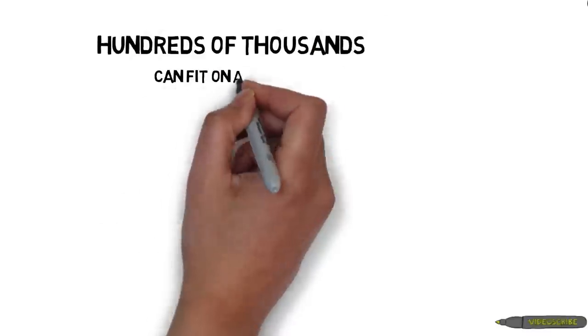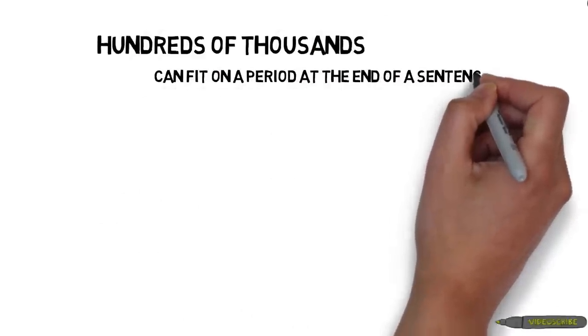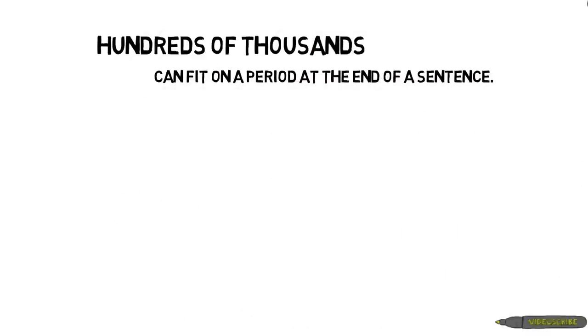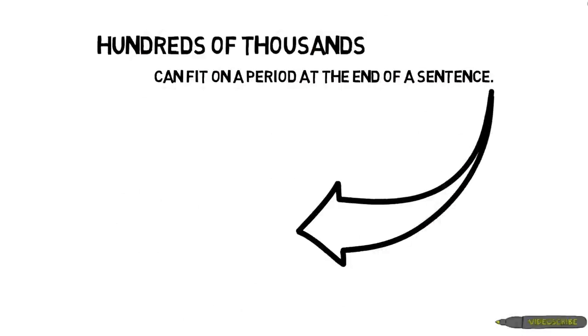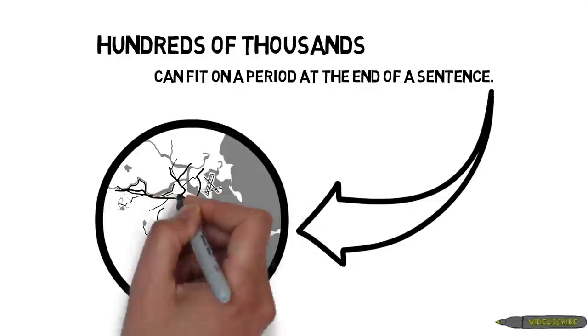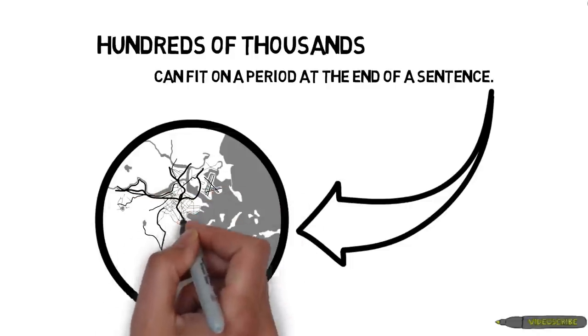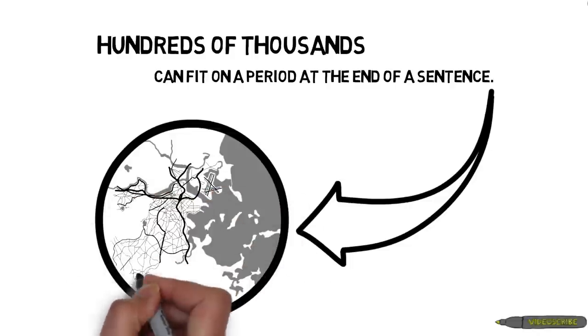Microbes are single-celled organisms, so tiny that hundreds of thousands could fit on a period at the end of a sentence. To put this into perspective, a tiny period could hold as many bacteria as there are people living in the entire city of Boston.